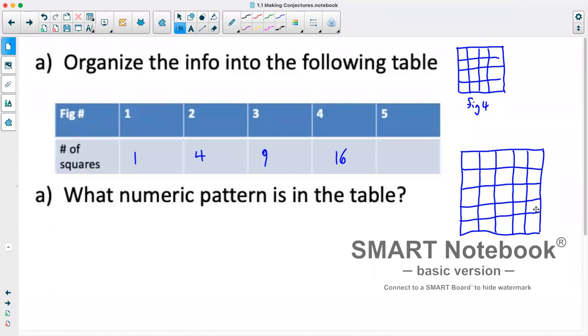Now, this would technically be the next figure in the sequence. So this is figure five. So if we add up all these, that gives us 25 squares.